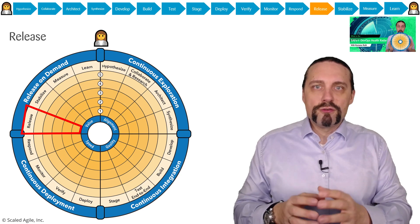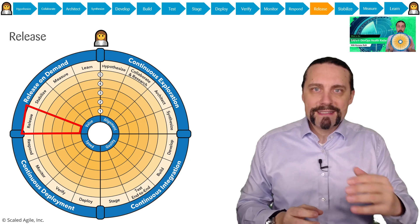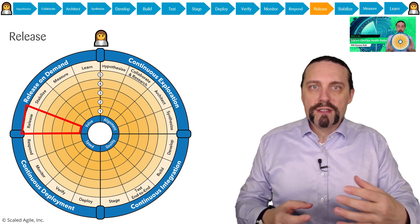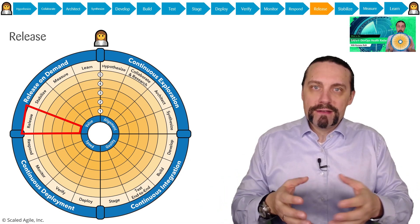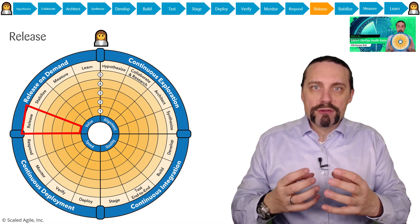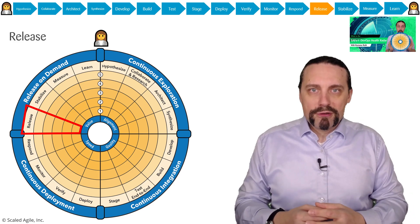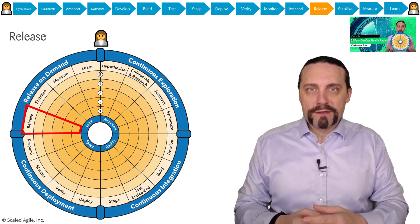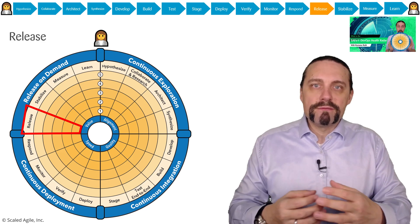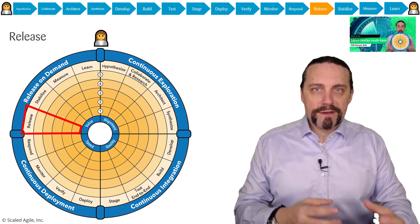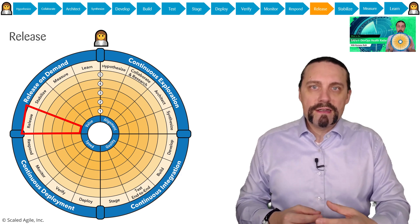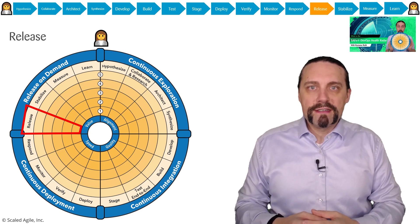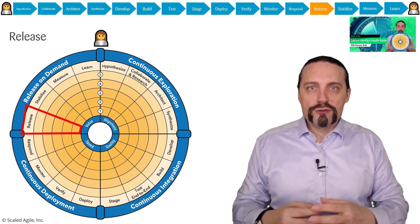After that we break down the features into user stories and start developing them. Then we commit our source code into the source code repository, reintegrate our changes with the rest of the changes, and build a deployable artifact. This deployable artifact is then tested end to end, deployed into a staging environment which is a production-near environment, and after final verification in staging, we deploy it to production and verify that everything is still okay.